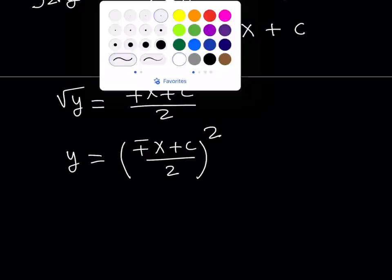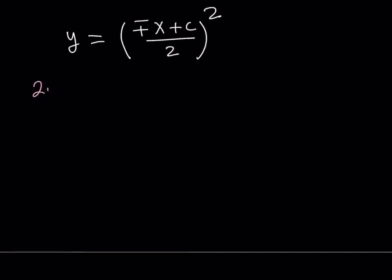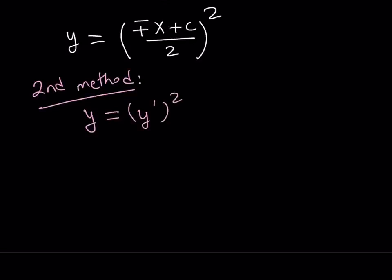Let's talk about the second method. I'm going to write the equation as y equals y prime squared, because if y is a function of x, dy over dx basically means y prime, the derivative of y. Now I would like to differentiate both sides, because I want to get y prime on the left hand side.